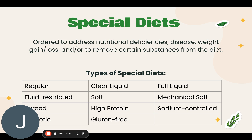A full liquid diet includes foods and liquids that can be poured at room temperature. This includes all foods on the clear liquid diet, but also strained soups, milk, milkshakes, plain ice cream, plain pudding, and yogurt.